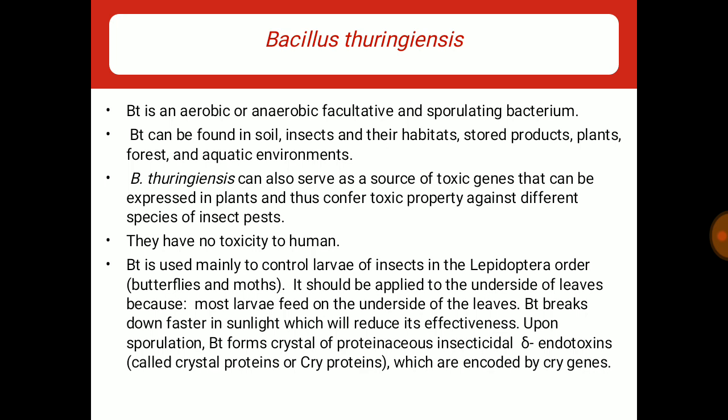Biopesticides have no toxicity to humans. BT is used mainly to control larvae of insects in the Lepidoptera order, for example butterflies and moths. BT ko as a biopesticide hum leaves ke underside area mein provide karte hain, because most of the larvae feed on the underside of the leaves. BT breaks down faster in sunlight, which will reduce its effectiveness. Upon sporulation, BT forms crystals of protein, jinhe hum delta endotoxins ya phir cry proteins kehte hain.